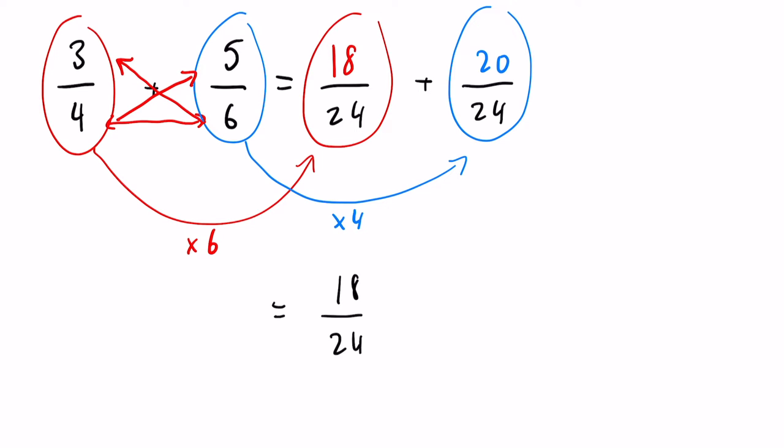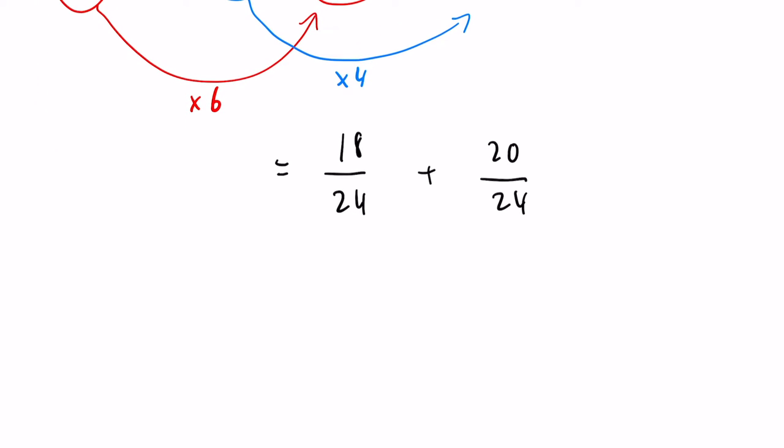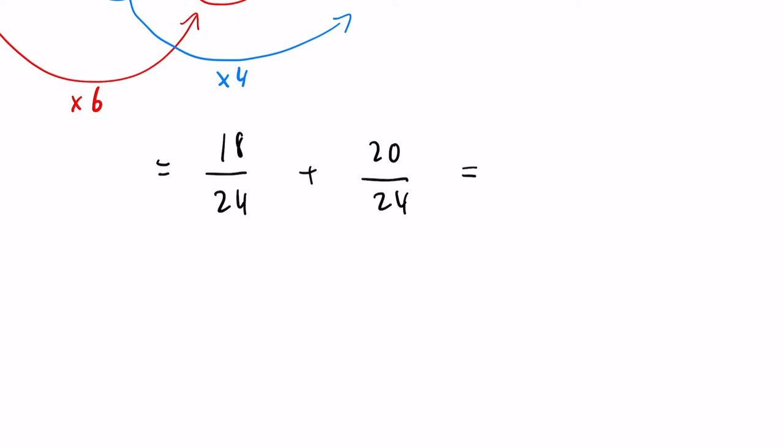Now if we rewrite this just to make it a little bit cleaner: 18 over 24 plus 20 over 24. All we have to do now once we have that common denominator, we can just add the top numbers together. So 18 plus 20 we're going to get 38 over 24.